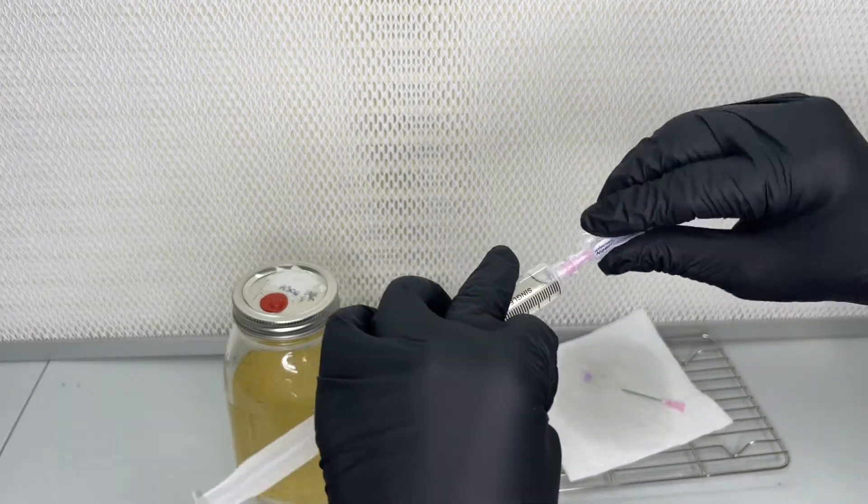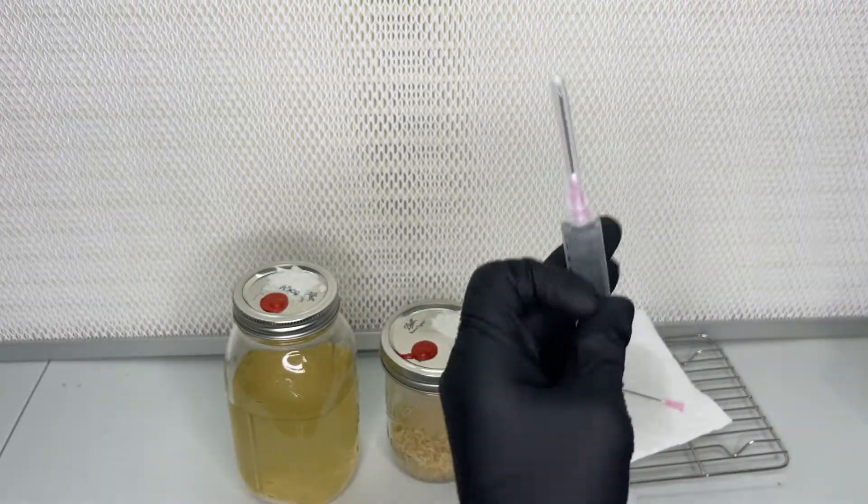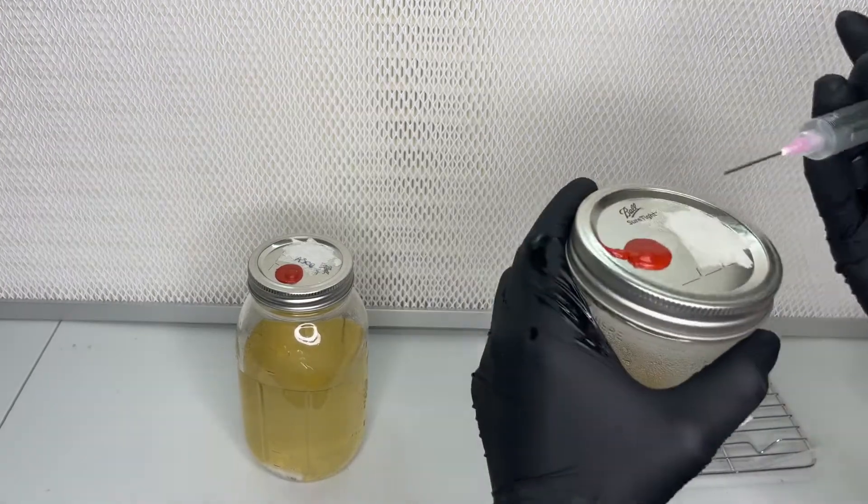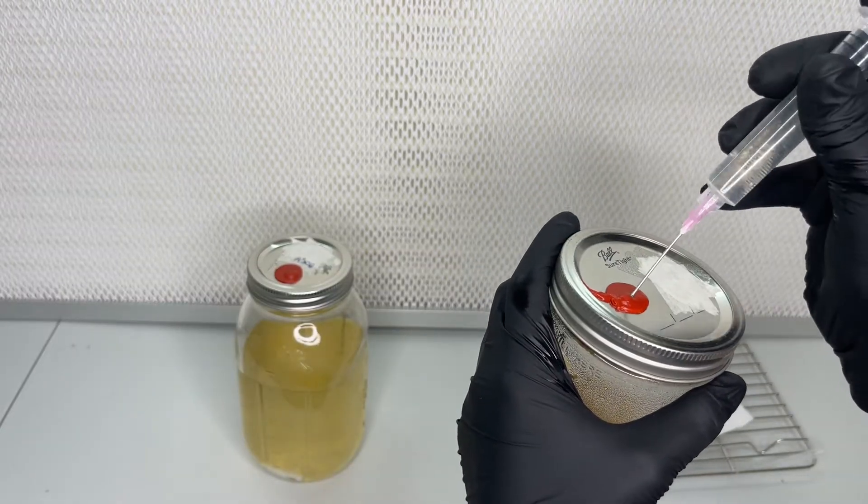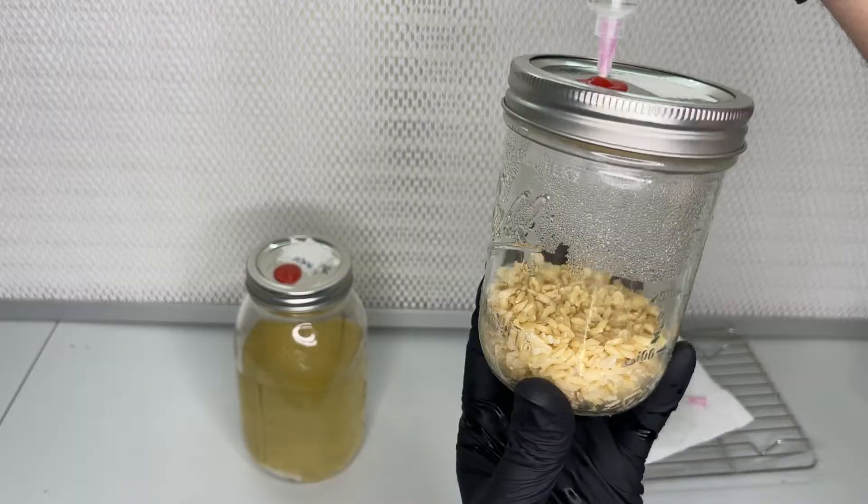After three days of colonizing, the jar is placed under LED lights for 12 to 24 hours per day. You'll know the culture is viable if you see pinning within 20 to 30 days.